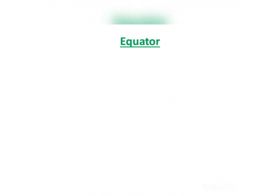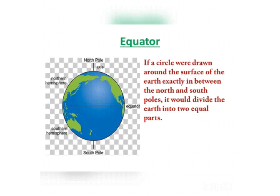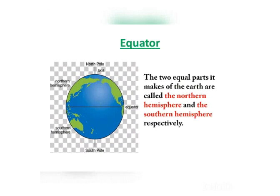Now let's understand the word equator. If a circle were drawn around the surface of the Earth exactly between the North and South Poles, it would divide the Earth into two equal parts. This imaginary circle is called the equator. The equator divides the Earth into two equal parts: the portion above the equator is called the Northern Hemisphere, and the portion below the equator is called the Southern Hemisphere.